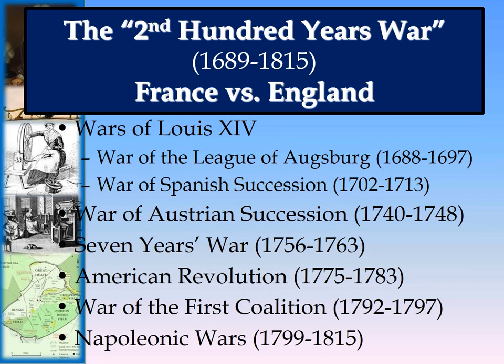The Second Hundred Years War includes all of the following: the Wars of Louis XIV, including the War of the League of Augsburg, the War of Spanish Succession, the War of Austrian Succession, the Seven Years' War, the American Revolution, the War of the First Coalition, and the Napoleonic Wars — all of which will be discussed in this unit and coming units.